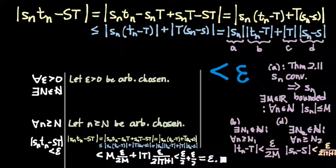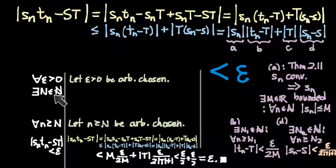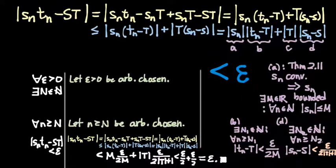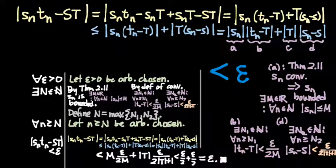The one thing we haven't answered in this proof is how we choose a single capital N that allows us to make all of these estimates in the last line of the proof — where does our capital N come from? Any other questions or things you want to expand upon in this rather intricate proof with a lot of moving parts?